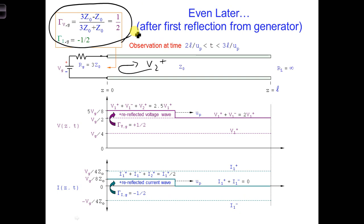It has the same form as the reflection coefficient at the load, except you're using RG, which is equal to 3Z0, instead of RL. Lastly, notice that the switch is still closed, so we still have V1+ all along that transmission line, as well as a V1-.